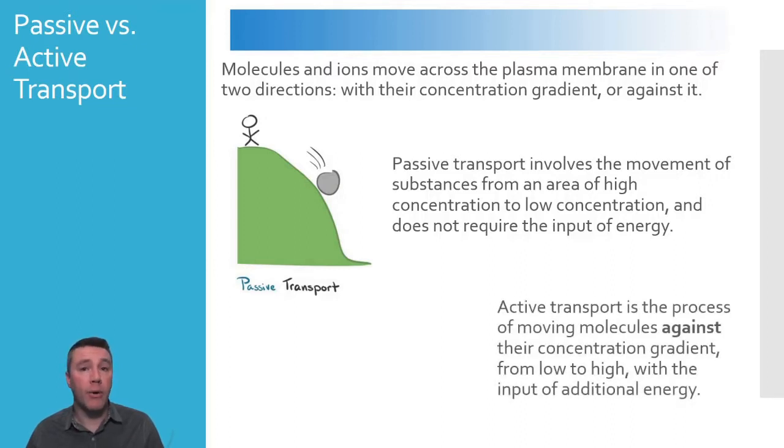Active transport, however, is the opposite of this, as it involves the movement of particles up a concentration gradient. Moving a molecule or ion from an area of low concentration to an area of high concentration does require the additional input of energy. All forms of transport that we're going to study can be categorized into one of these two groups: passive transport or active transport.